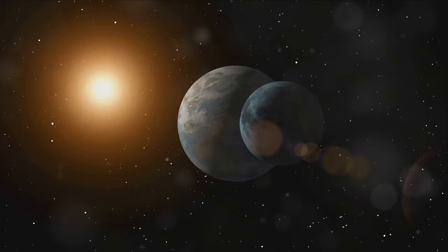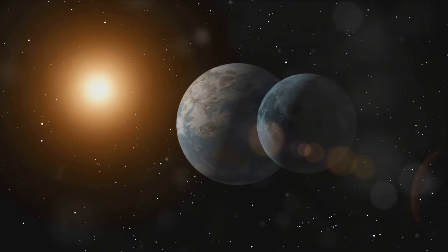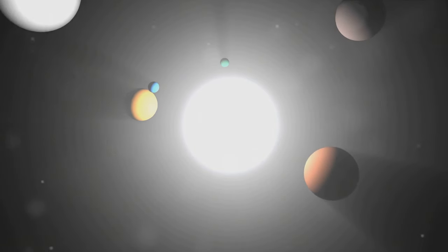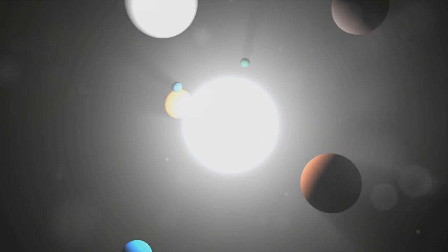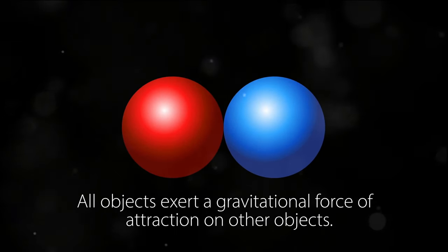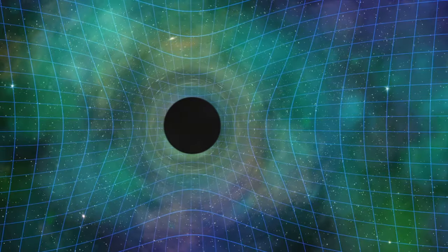To understand the three-body problem, imagine you're juggling three balls. Picture it. You've got one ball in the air, one in your hand, and one about to be thrown. Now, if you're a skilled juggler, you can predict where each ball will fall, when to catch it, and when to throw the next one. Simple, right? But what if we complicate things a little bit? What if each ball, in mid-air, could somehow affect the path of the other balls? Imagine a world where each ball exerts a pull on the others, changing their course in unpredictable ways. Suddenly, juggling becomes a lot more complex.